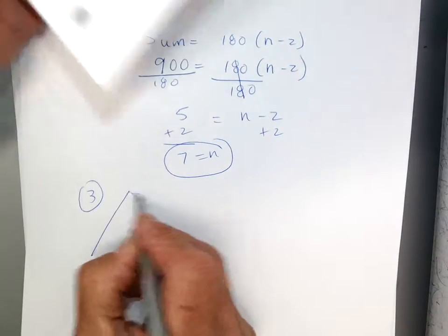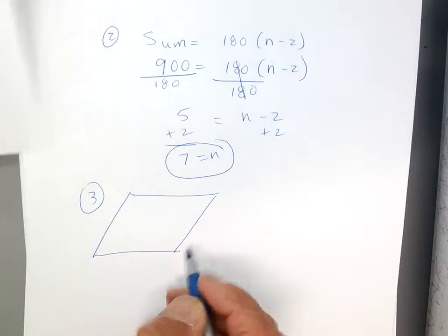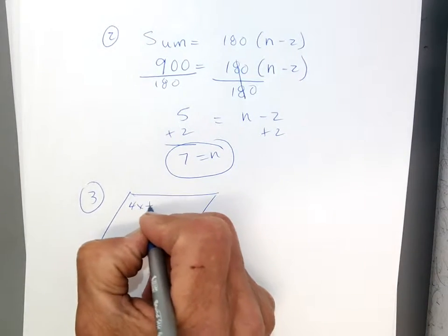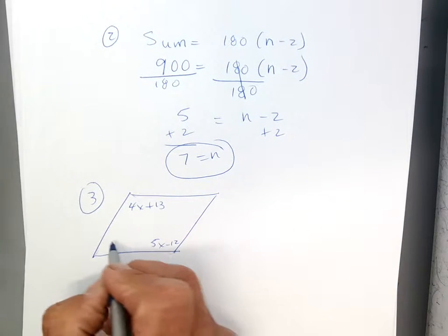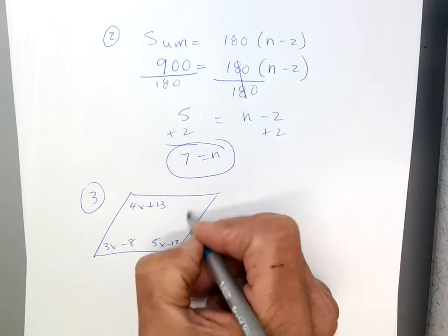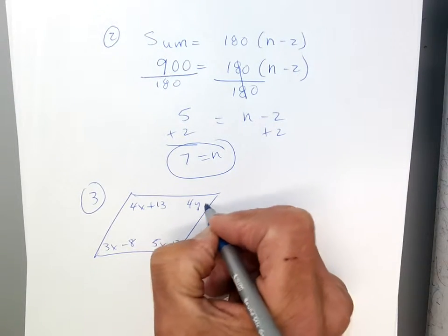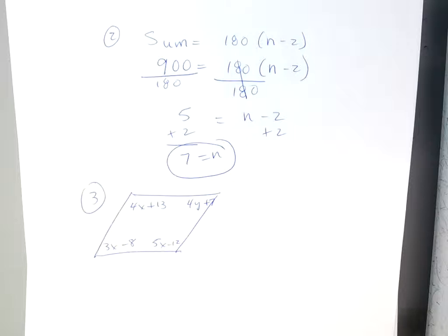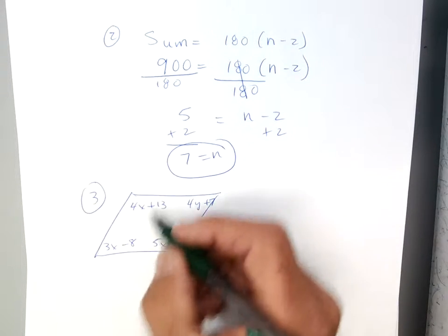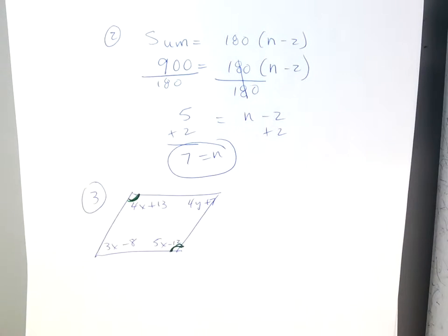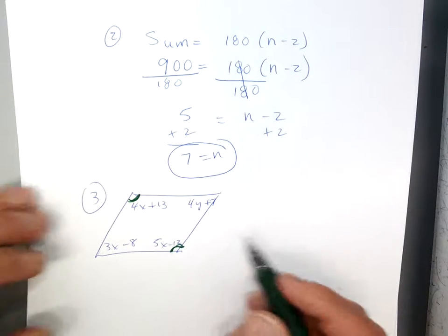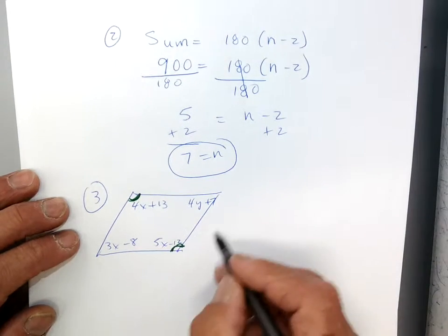All right, no big deal. 3. Let's look at 3. So, 3, all right, we've got this parallelogram. It looks like this. 4x plus 13, 5x minus 12, 3x minus 8, and 4y plus 7. Okay, a lot of x's and a lot of y's, so where do I start? Well, there's two ways to tackle this, but I'm going to go the easy way. I know these two angles are equal. Because in a parallelogram, opposite angles are equal. So that's where I'm going to start.